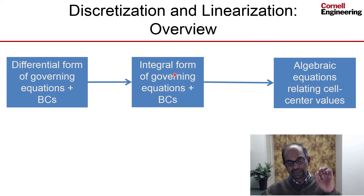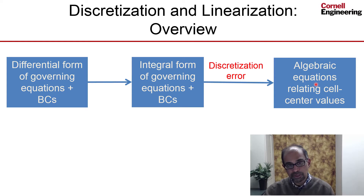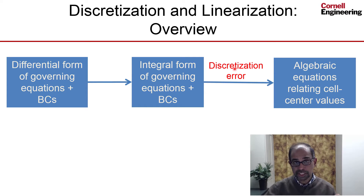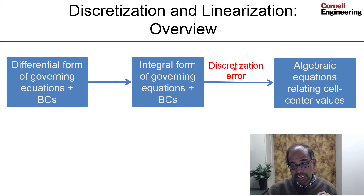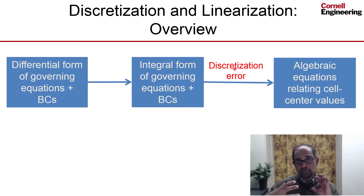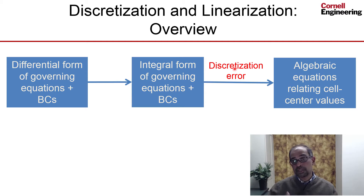In the process of going from the integral form to the set of algebraic equations, we introduce an error called the discretization error. I did indicate the error as we were deriving the algebraic equation for the mass balance for our particular cell. We can reduce the discretization error by using more cells in the domain — that's mesh refinement — or by increasing the order of accuracy of the interpolation.